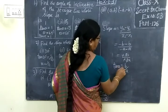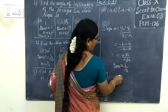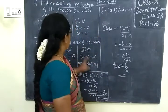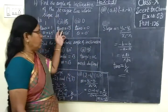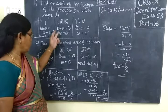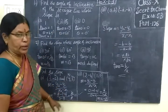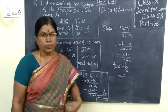So tan θ equals b/a. This is (y₂ - y₁)/(x₂ - x₁), we'll get back.